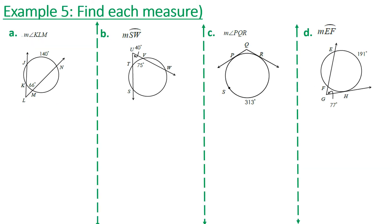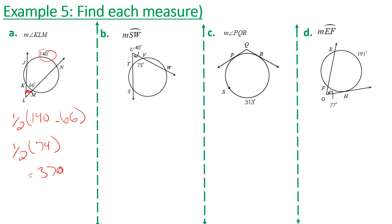For example 5a, we want to find the measure of angle KLM. We subtract the smaller arc from the larger arc and take half. That's one-half of 140 minus 66. 140 minus 66 is 74, and half of that is 37 degrees. So the measure of angle KLM is 37 degrees.